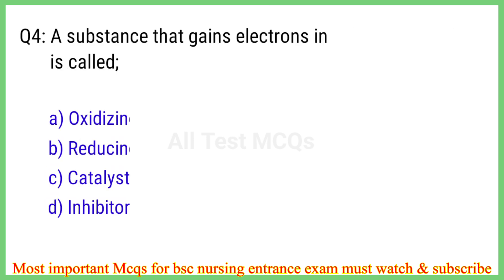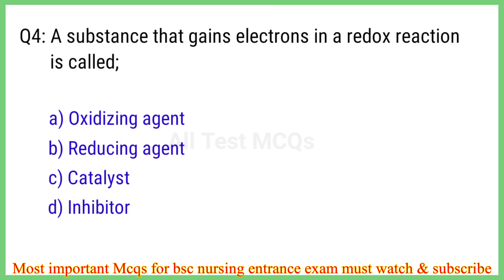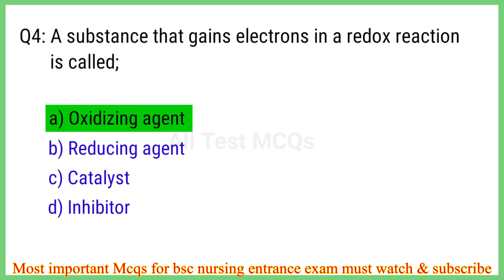Q4. A substance that gains electrons in a redox reaction is called? The right answer is option A: Oxidizing agent.